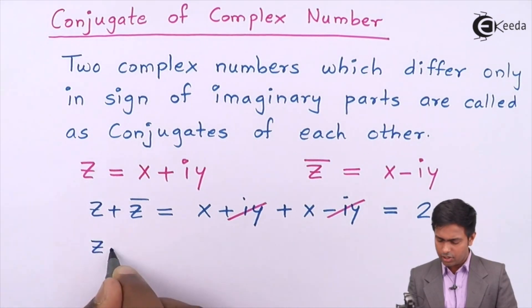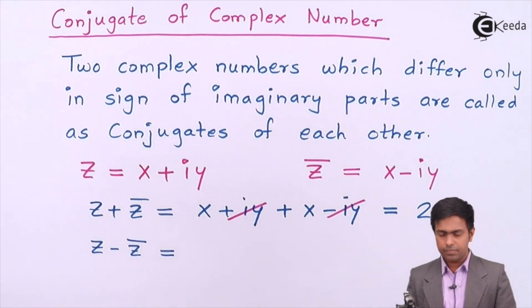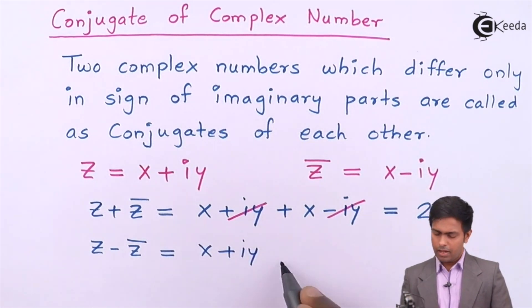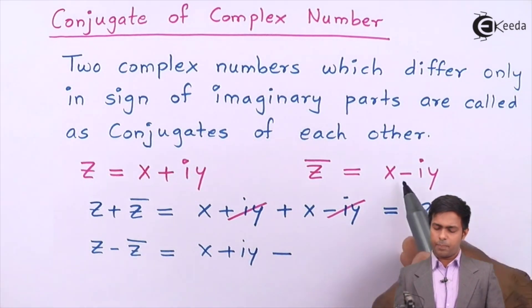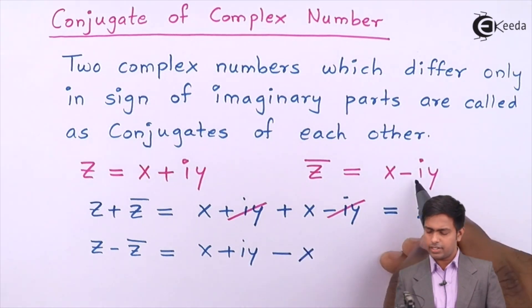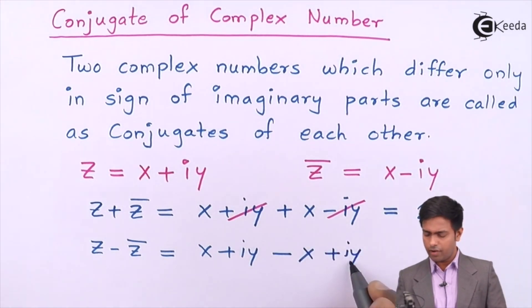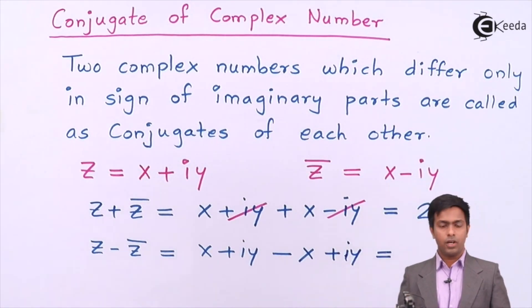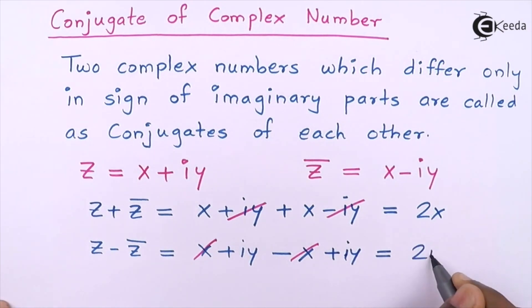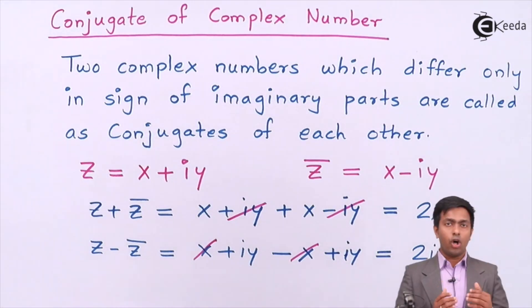Similarly, if we perform the subtraction, then it is x + iy minus z̄. When I'm subtracting second number, the sign of the second number will change, so positive x will become negative x, negative iy will become positive iy. Here now x and x will be cancelled and we will get 2iy. So the subtraction of complex number and the conjugate of that complex number is the imaginary part, or I will say twice of imaginary part.